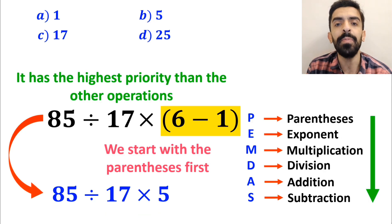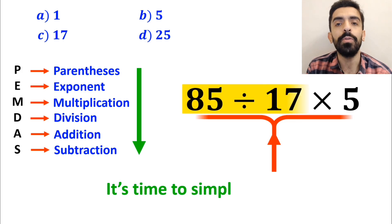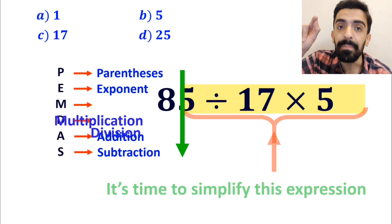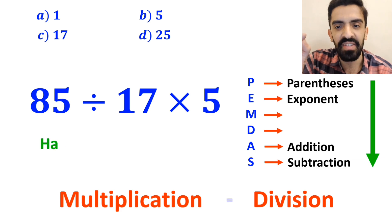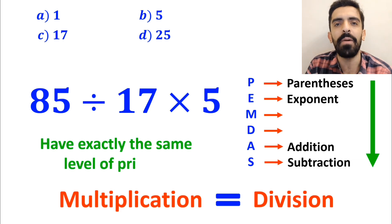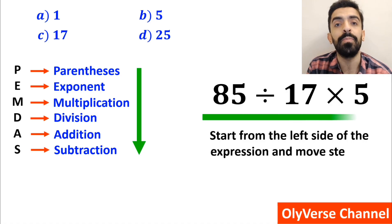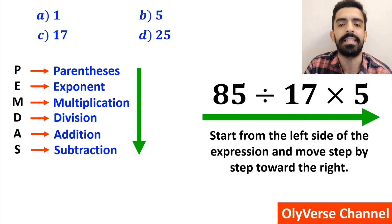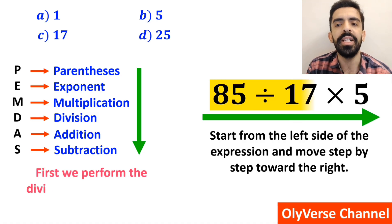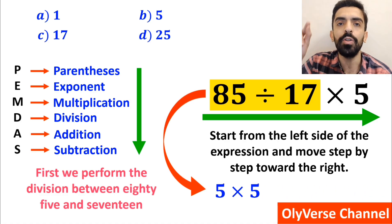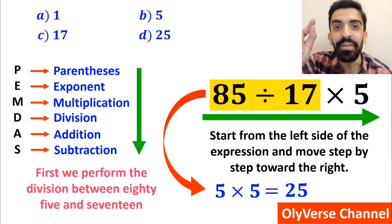So this expression simplifies to 85 divided by 17 multiplied by 5. It's very important to note that in the PEMDAS rule, multiplication and division have exactly the same level of priority. In this case we start from the left side of the expression and move step by step toward the right. So first we perform the division between 85 and 17, which simplifies this expression to 5 multiplied by 5, and finally the value of this expression will be 25.